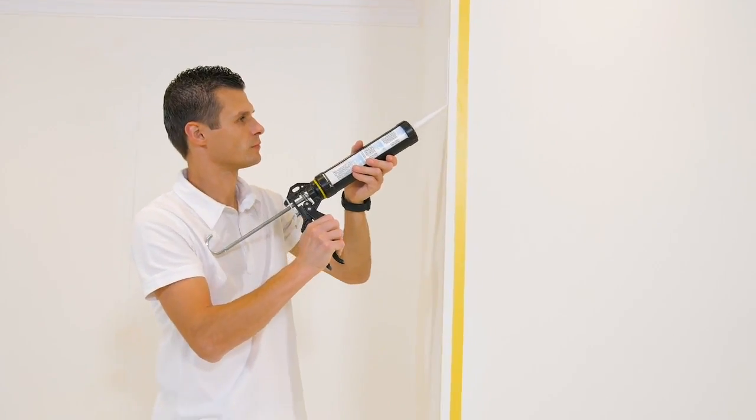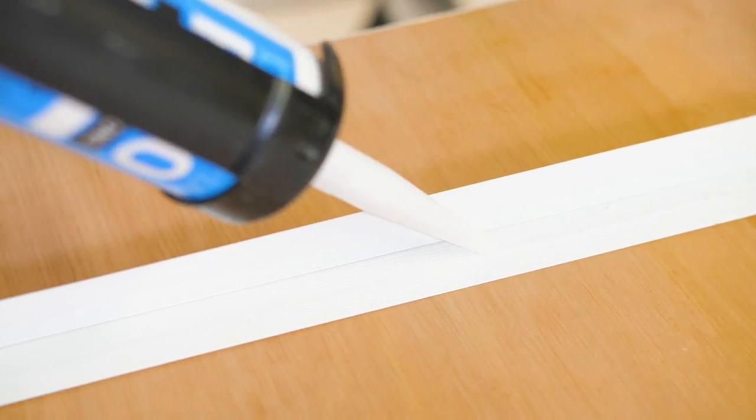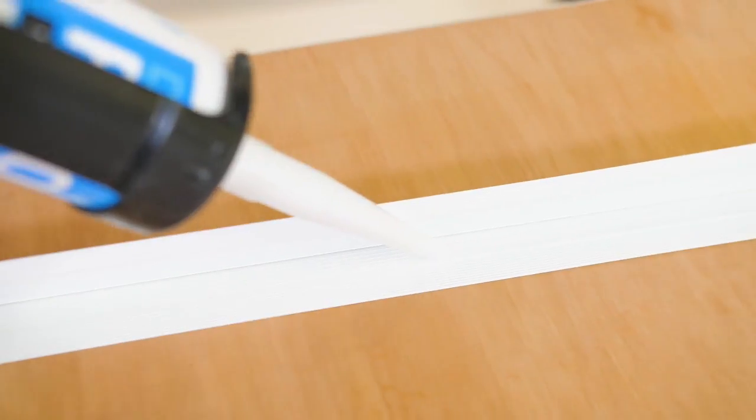Apply the contact adhesive to the wall and to the profile guard. Leave the adhesive to dry for the prescribed amount of time.